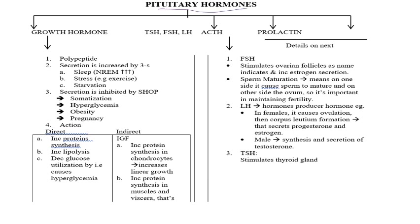Now let's come to the pituitary hormones. Growth hormone is a polypeptide and its secretion is increased by the three S's: sleep, stress, and starvation. It is inhibited by somatostatin and hyperglycemia.